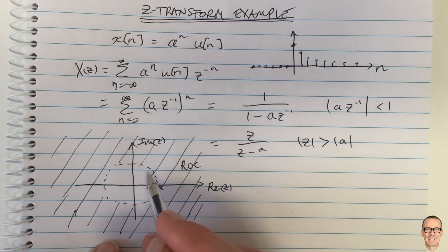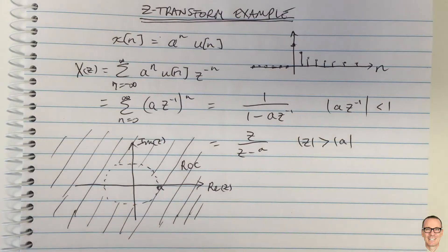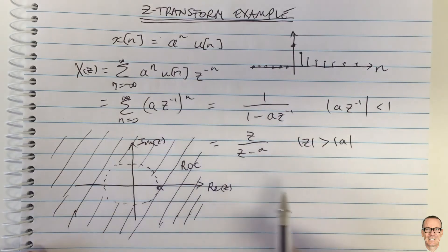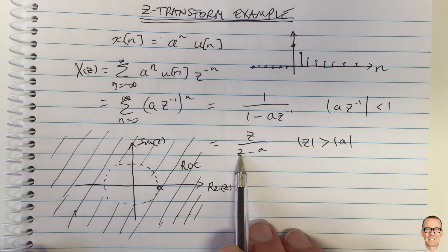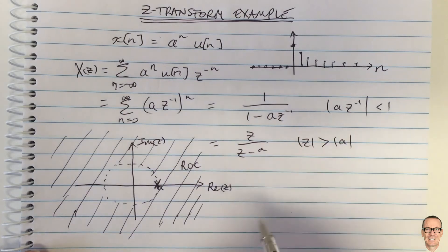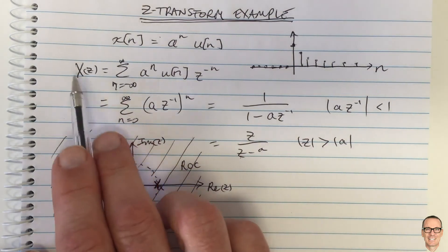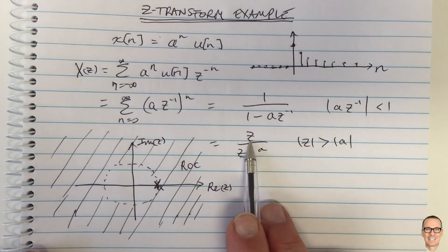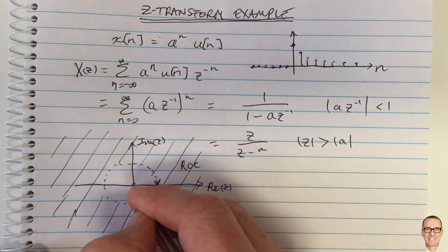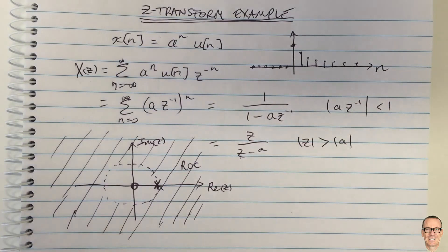And for Z-transforms, it's a circular boundary on the region of convergence. And there's a pole at Z equals A, because if Z equals A, you get an infinite value here. And there's a zero at Z equals 0 in the Z-plane.